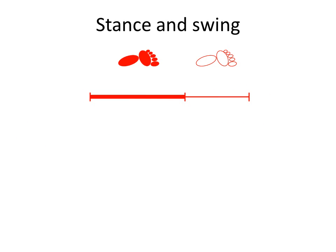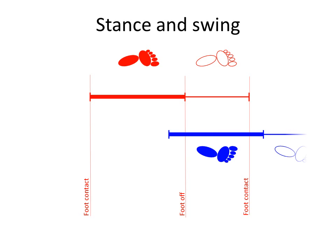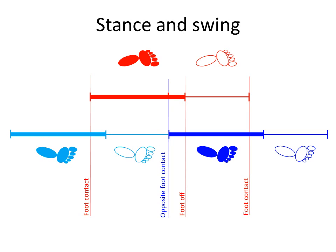To subdivide the left gait cycle further we need to consider what is happening on the right side — we'll denote this with the colour blue. The right foot makes contact with the floor about half way through the left gait cycle and then goes through exactly the same cycle of events as the left side did. Right foot contact is referred to as opposite foot contact in relation to the left gait cycle. The previous right gait cycle can also be depicted, from which we can see where right foot off occurs — as you'll have guessed, this is called opposite foot off.